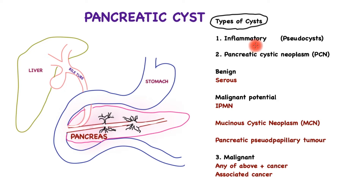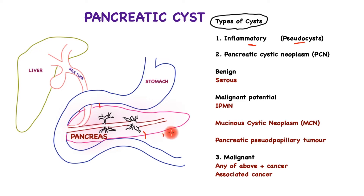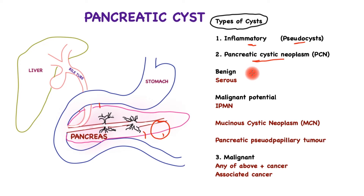There are three main types of pancreatic cysts. First, inflammatory or pseudocysts. These are not true cysts — they do not have a lining. When the pancreas is inflamed with pancreatitis, it can cause fluid to collect, which forms scar tissue around it, and that is a pseudocyst. Then there are pancreatic cystic neoplasms, which are primarily of two main types.